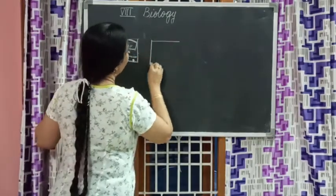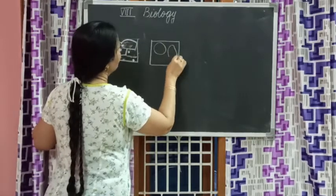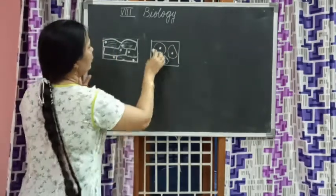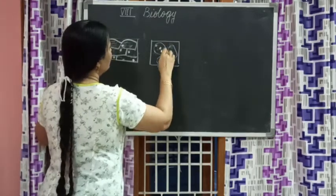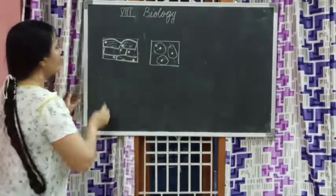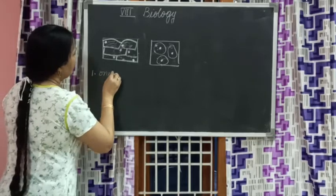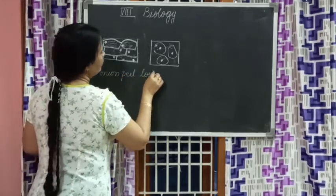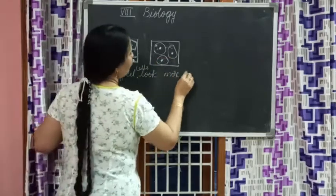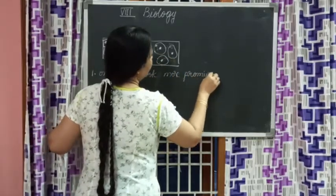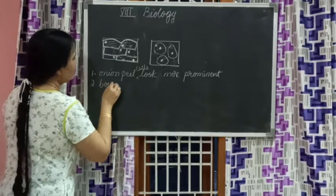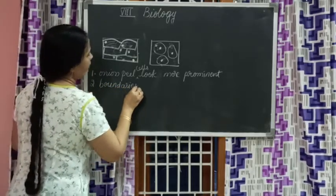Now this is onion peel and this is cheek cells. The difference between onion peel and cheek cells is the question. First, onion peel cells look more prominent. Both are stained with safranin. The boundaries are prominent and clear in onion peel cells.